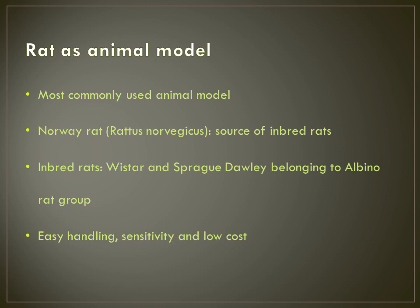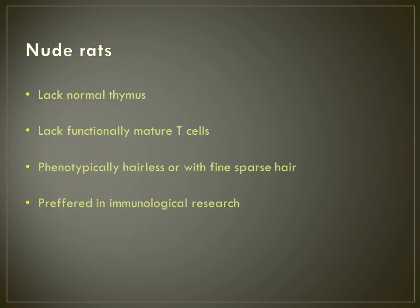Rat is the most commonly used animal model. The source of many of the inbred rats used in the laboratory today is the Norway rat or Rattus norvegicus. From Rattus norvegicus we have inbred rats such as Wistar and Sprague-Dawley rats, which belong to the albino rat group — simply pink-eyed rats. They are preferred because they are easy to handle, sensitive, and low cost of maintenance.